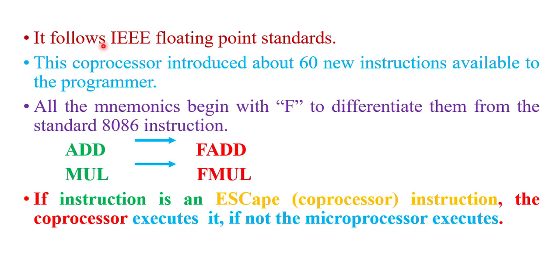8087 follows IEEE floating point standard. This coprocessor introduced about 60 new instructions available to the programmer. All the mnemonics begin with F to differentiate them from the standard 8086 instruction.